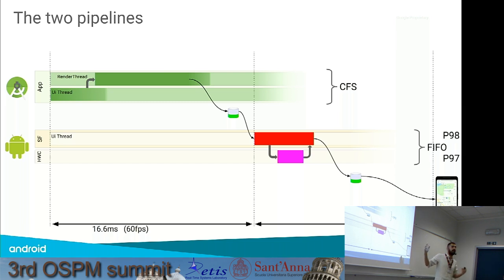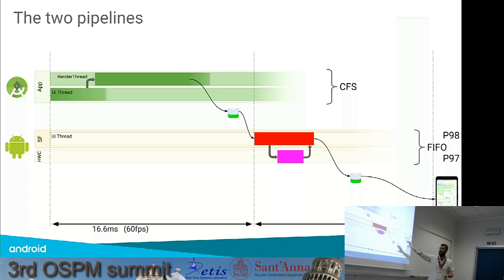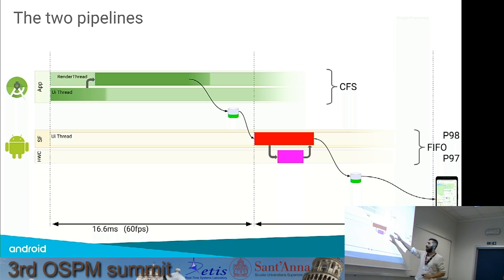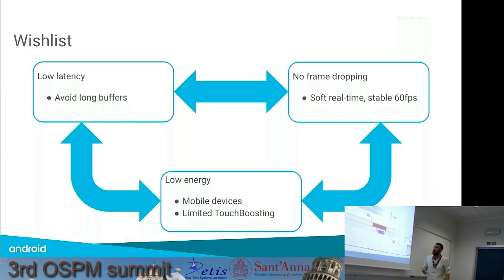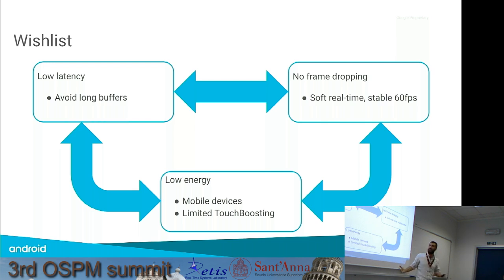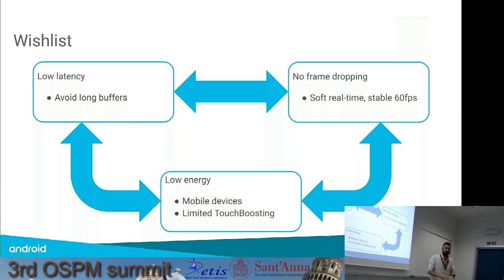From the scheduler perspective, we are managing these threads differently. The application is scheduled with CFS, and Surface Flinger and Hardware Composer threads — all threads in Surface Flinger — are managed with FIFO at pretty high priorities. What we would like for a display pipeline is low latency as much as possible. Since Android has many gaming applications, we don't want the system to show results of an action after too long — we want it to be as reactive and interactive as possible.